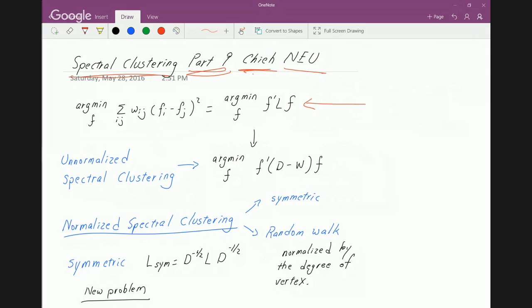So what we've done so far is called unnormalized spectral clustering, which for a lot of cases that you will work with, it would work just fine.